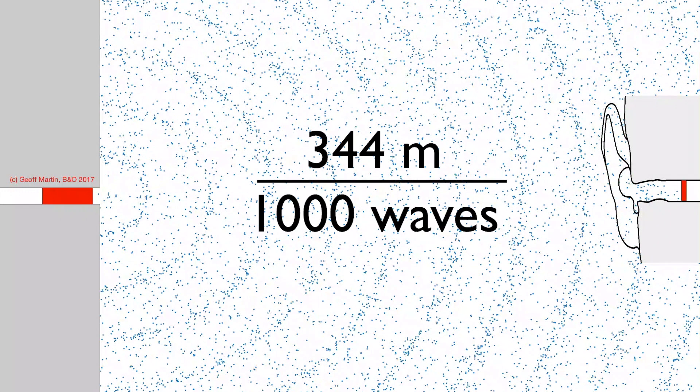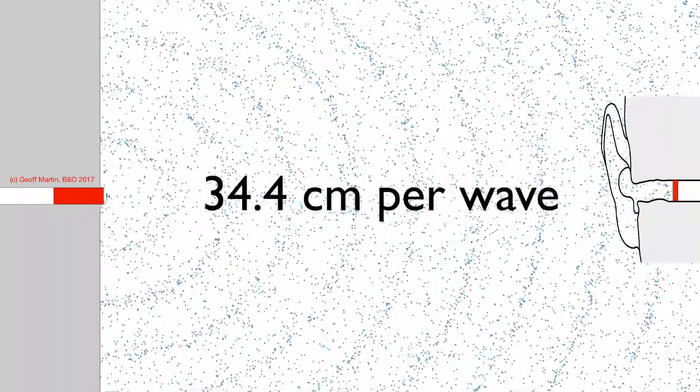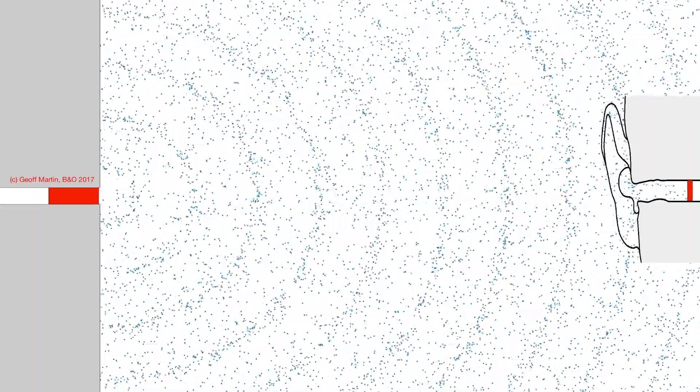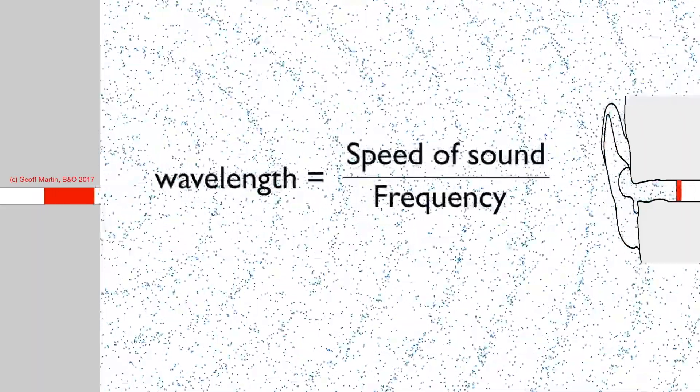That means you've got 1,000 waves of compression, rarefaction, compression, rarefaction - squeezed together, pulled apart, squeezed together, pulled apart - in the 344 meters distance to the loudspeaker. That means every wave is 34.4 centimeters long. That's 344 meters divided by 1,000 waves.